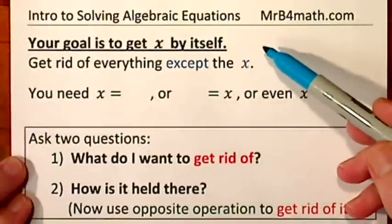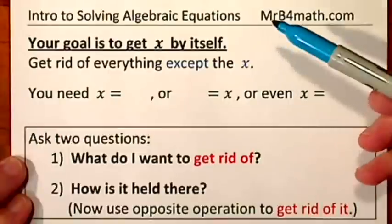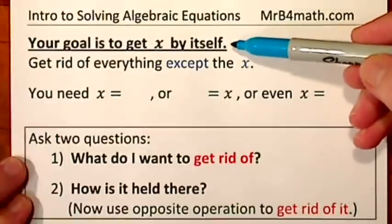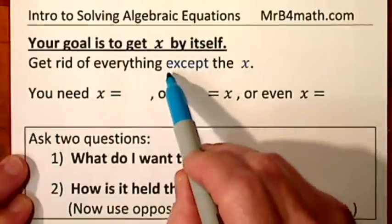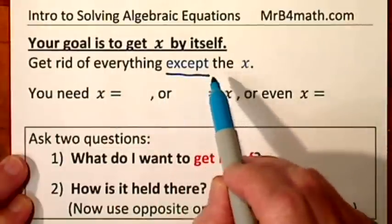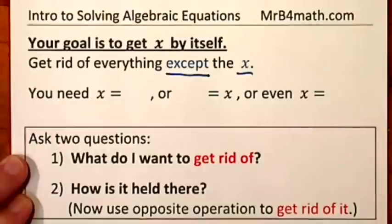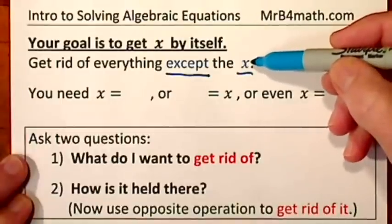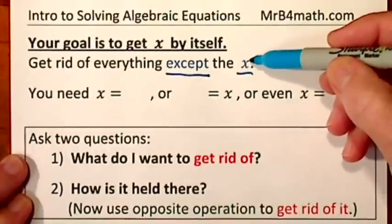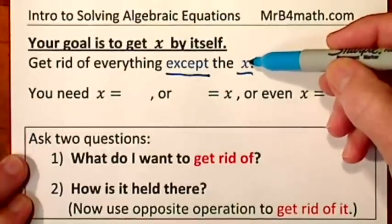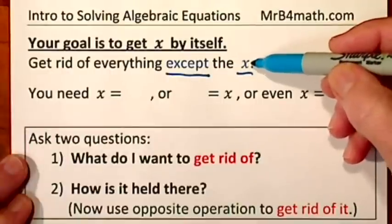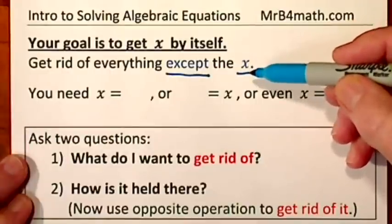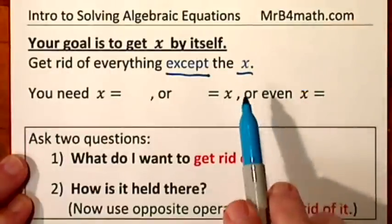In solving algebraic equations, your goal is to get x by itself. You accomplish that if you get rid of everything except the x. And of course if the variable was an a or a k, you would solve for that variable. I'll use x a fair bit, so that's why I chose it here.